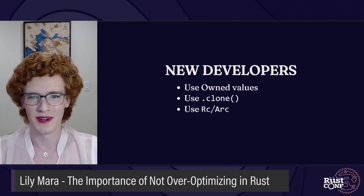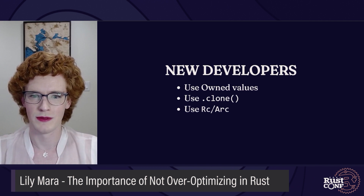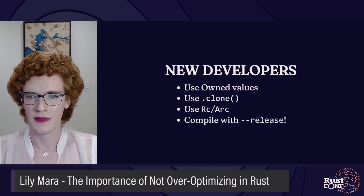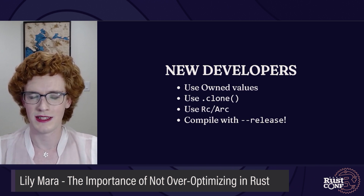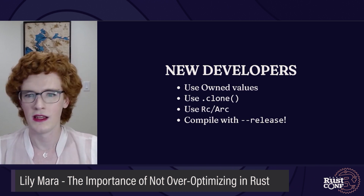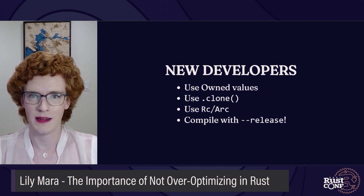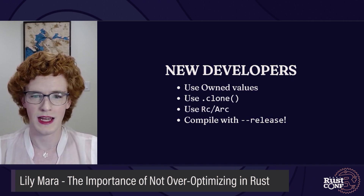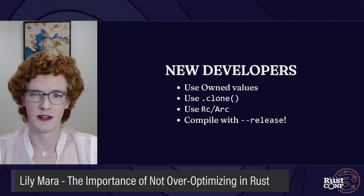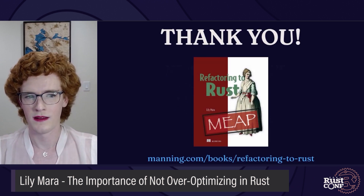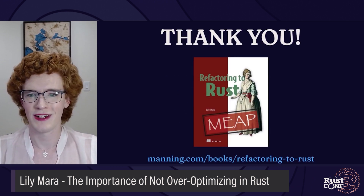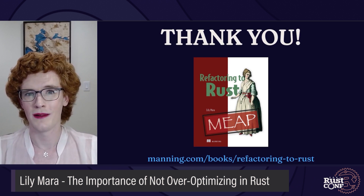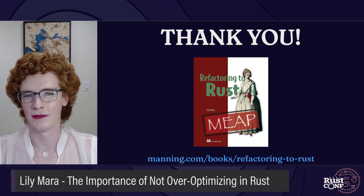Finally, and this one's important if we want to hide the performance costs of the previous points, compile your code with the release flag. If you've spent any time on Rust communities like the subreddit or Discord servers, you've probably seen someone complaining about Rust being slow, only to become impressed with the performance after recompiling with optimizations turned on. Thank you everyone. I hope that this talk inspires you to write less heavily optimized Rust code, and new developers to not worry so much about the performance.